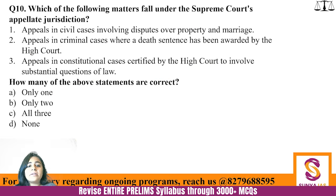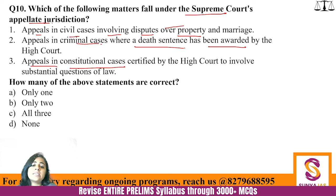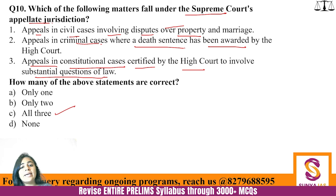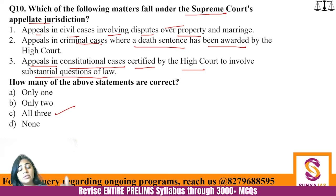Question 10 — Which matters fall under the Supreme Court's appellate jurisdiction? Appeals in civil cases involving disputes over property and marriage; appeals in criminal cases where a death sentence has been awarded by the High Court; and appeals in constitutional cases certified by the High Court to involve a substantial question of law. All three lie in the appellate jurisdiction. The appellate jurisdiction is the widest jurisdiction of the Supreme Court. All three are correct.